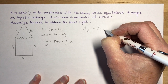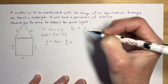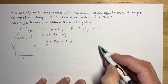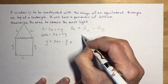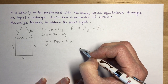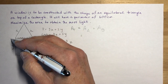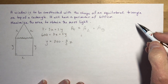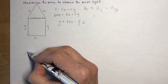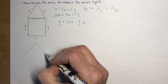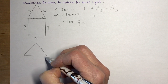From the perimeter equation 3x + 2y = 600, solve for y: y = (600 − 3x) / 2 = 300 − (3/2)x. Now I want to maximize the total area, which equals the area of the triangle plus the area of the rectangle. The tricky part is finding the area of the equilateral triangle since I don't immediately know its height.